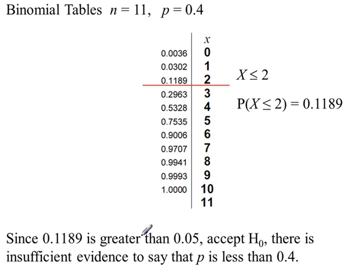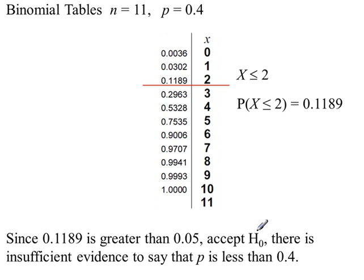This probability, 0.1189, is greater than 0.05, which came from the significance level. Because it's greater, we accept H0 and say there's insufficient evidence to say that p is less than 0.4. If this probability was less than 0.05, we would reject H0.